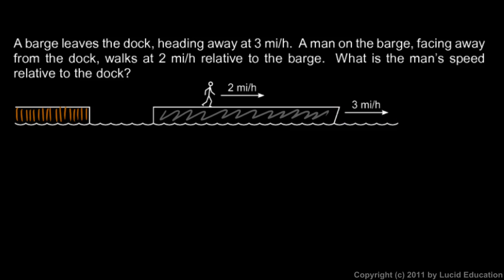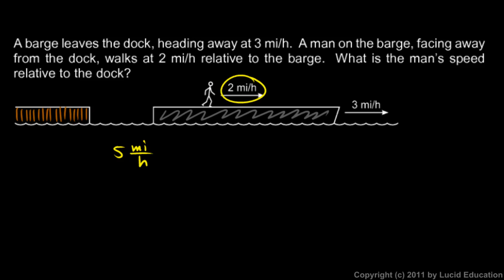At the same time, a man on the barge walks at 2 miles per hour relative to the barge — that's how fast he's moving across the top of the barge. What is the man's speed relative to the dock? You can probably see that the answer is 5 miles per hour. If he were just sitting still on the barge, he would be moving with the barge at 3 miles per hour. But because he's walking as well relative to the barge, he gets this extra 2 miles per hour in the same direction, so he's moving at 5 miles per hour away from the dock.